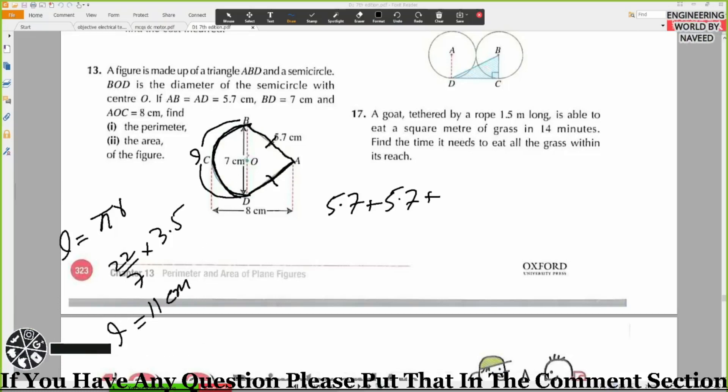Centimeter. Because diameter is given in cm, so this is centimeter, this is also centimeter, so it will be centimeter. So here is 11 cm. If you give it to meter then you can convert it.